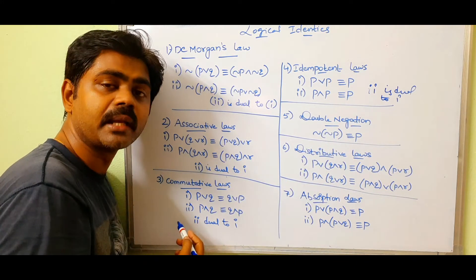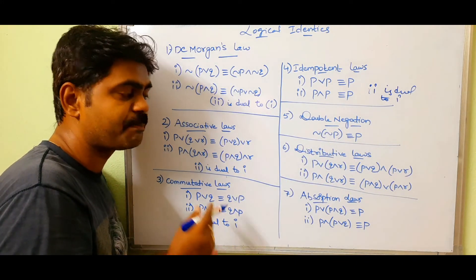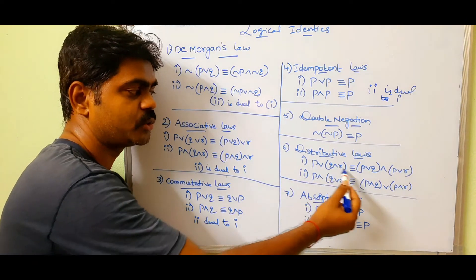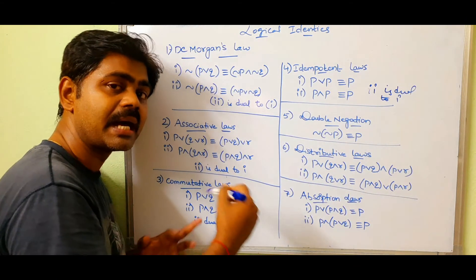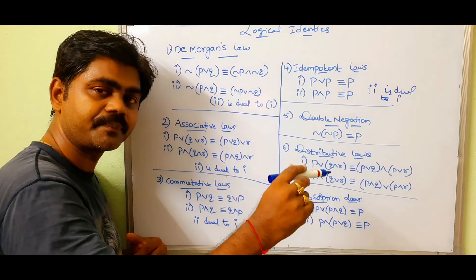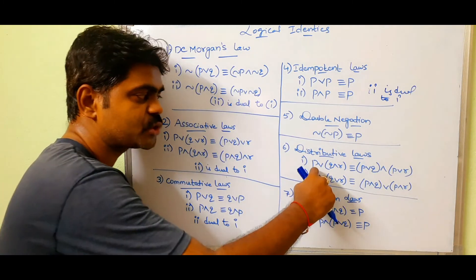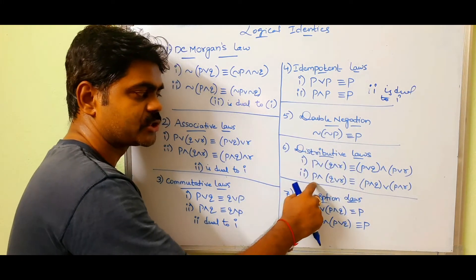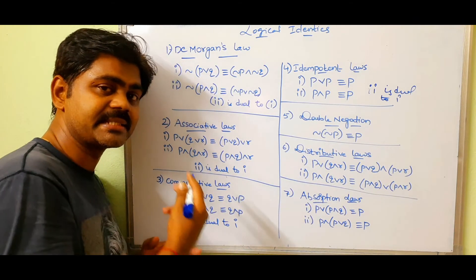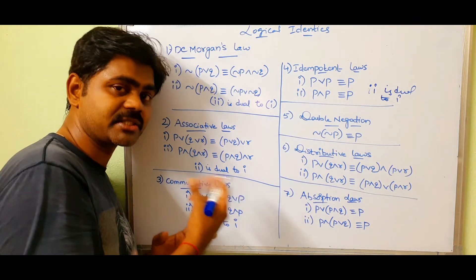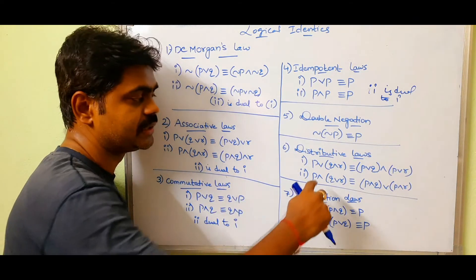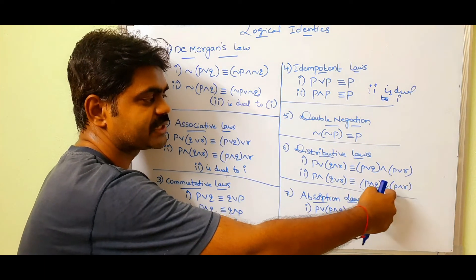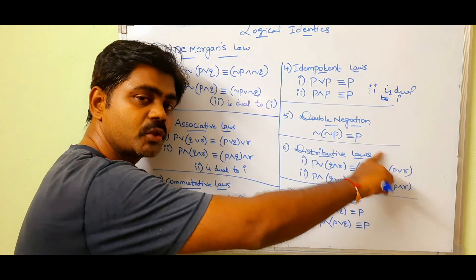Next is distributive law. P OR (Q AND R) equals (P OR Q) AND (P OR R) — we are distributing P. So the dual is: change OR to AND and AND to OR, giving P AND (Q OR R) equals (P AND Q) OR (P AND R). So formula 2 is dual to formula 1.